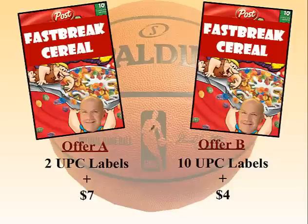Imagine they're trying to give away a nice shiny basketball to all those young players out there. In order to get a basketball you can do one of two things. Under offer A you can buy two boxes of cereal, send in the labels and then add another $7 and they'll send you a nice basketball.